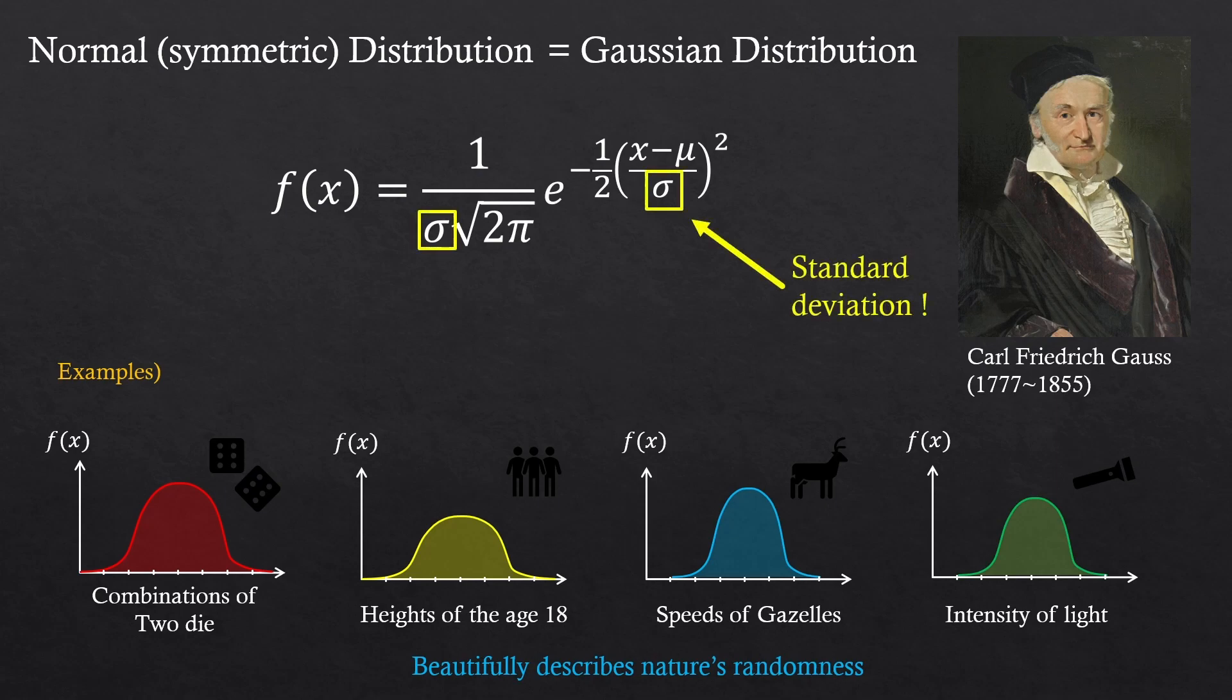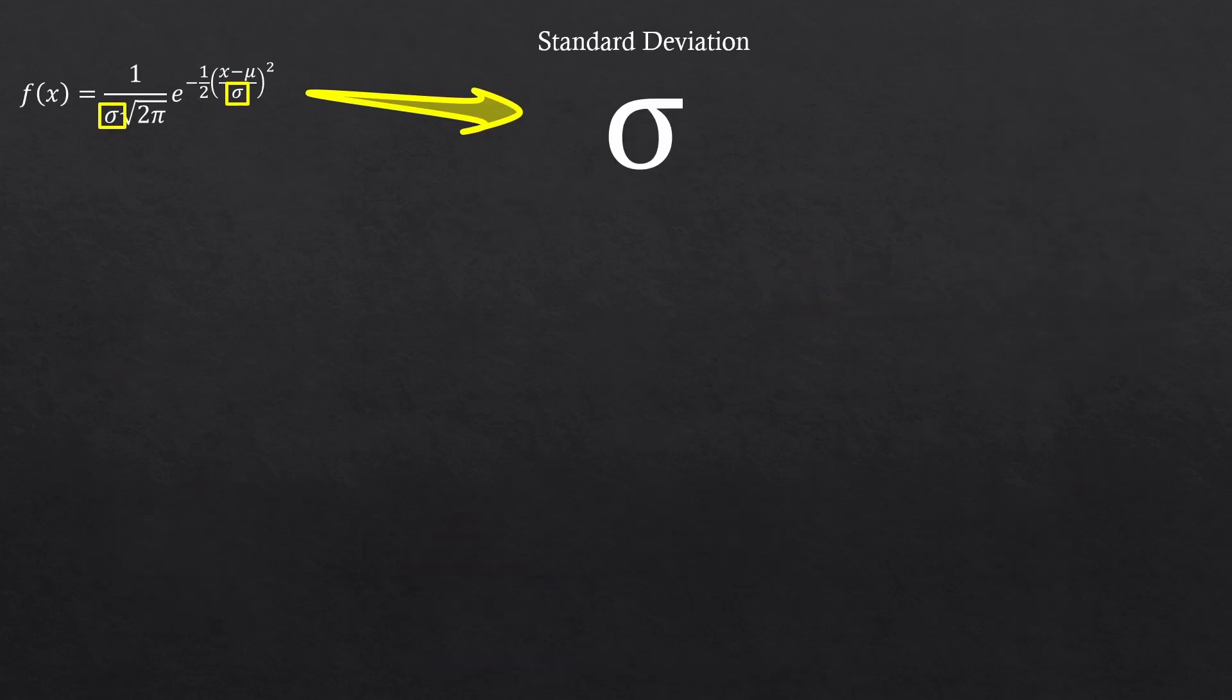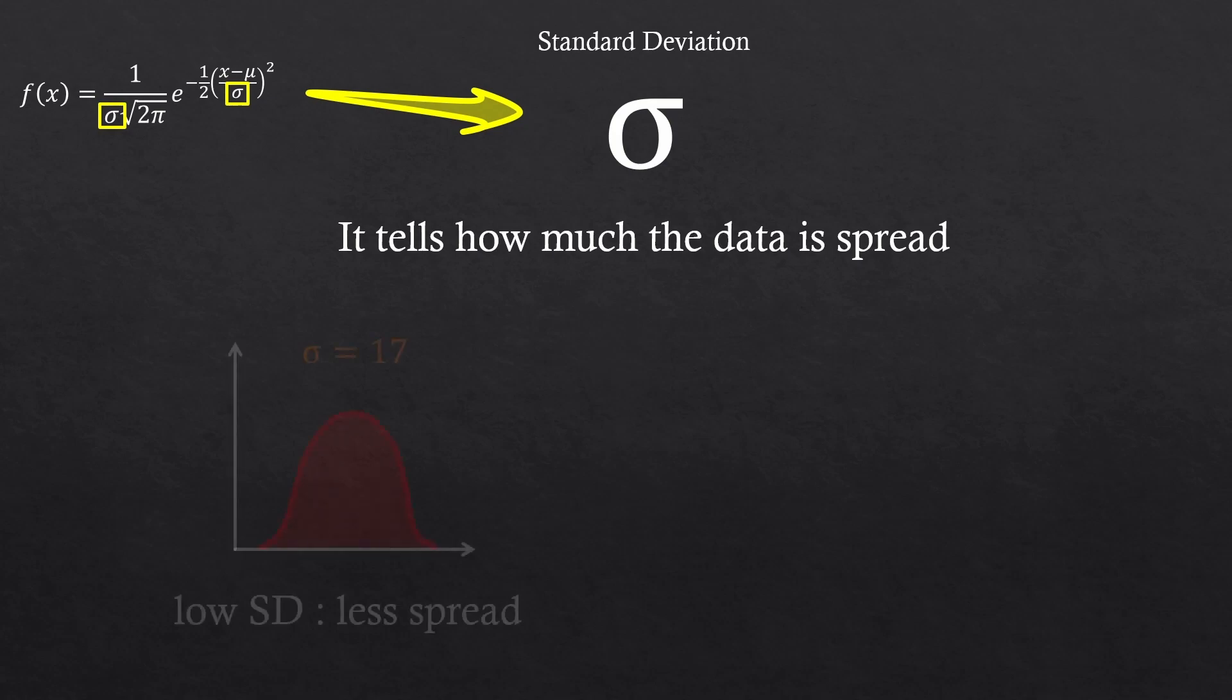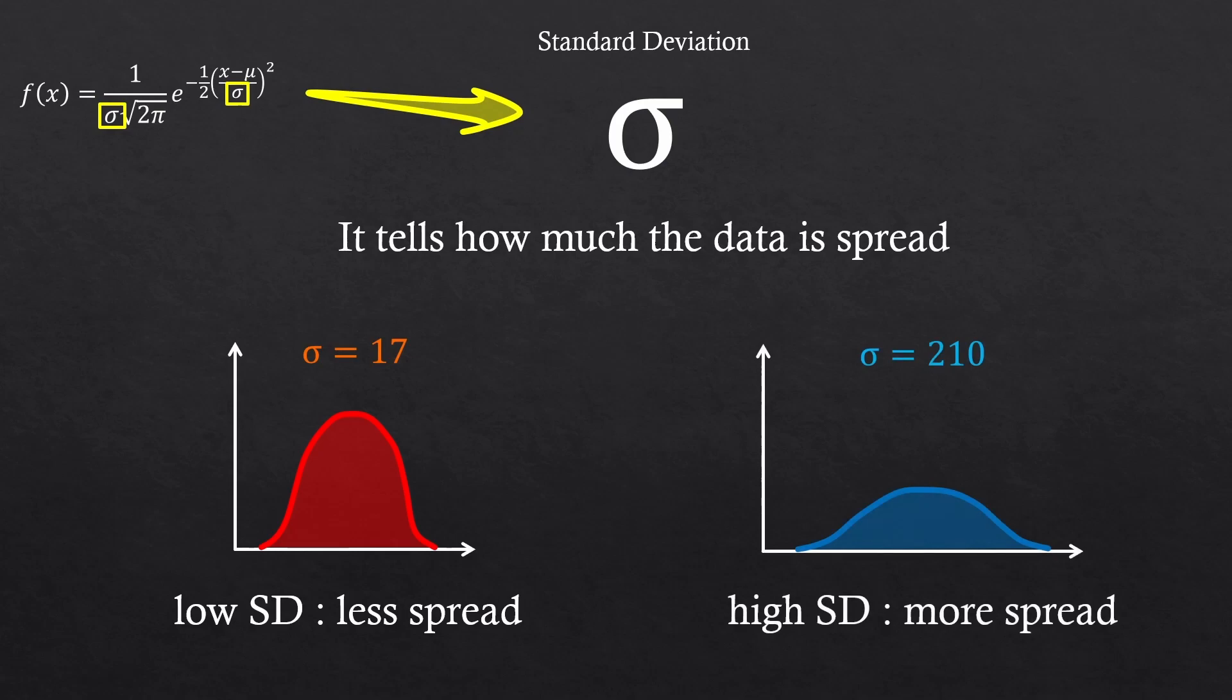And here's our standard deviation, denoted as sigma, which is a Greek alphabet. You don't need to know this full expression, but just this sigma. So what is standard deviation and what does it do? It tells how much the distribution, I mean the data, is spread. If the standard deviation is low, then the data isn't spread much. If the standard deviation is high, then the data is very much spread. That's what standard deviation tells us about the distribution.